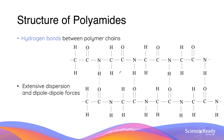A key difference between polyamides and polyesters is that hydrogen bonds can be formed between polymer chains of polyamides. This is because hydrogen atoms bound to nitrogen can be donated to the adjacent oxygen atoms of a second polyamide molecule. On top of hydrogen bonding, polyamides also have extensive dispersion forces as well as dipole forces, which are also found in polyesters.